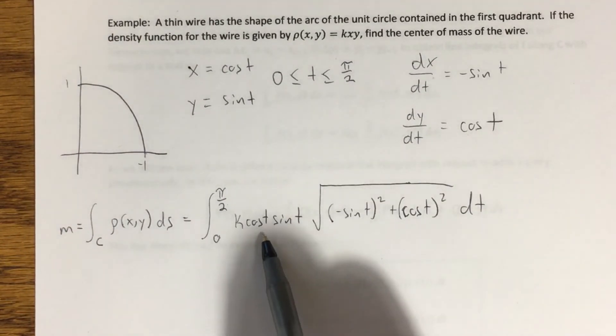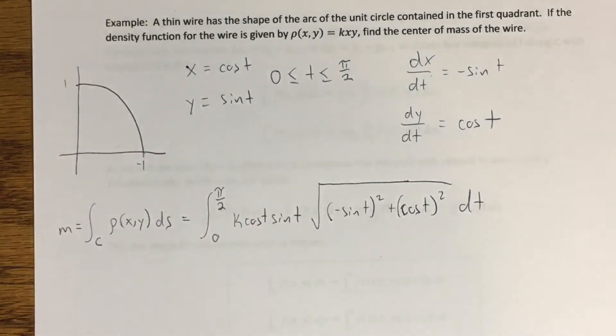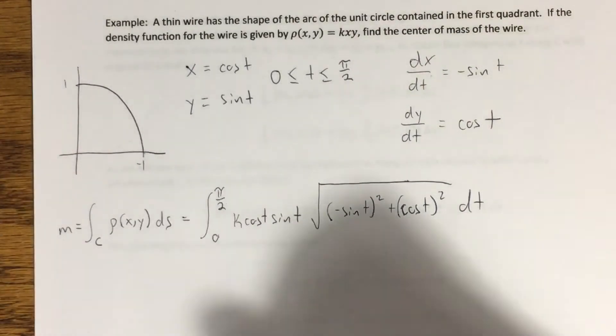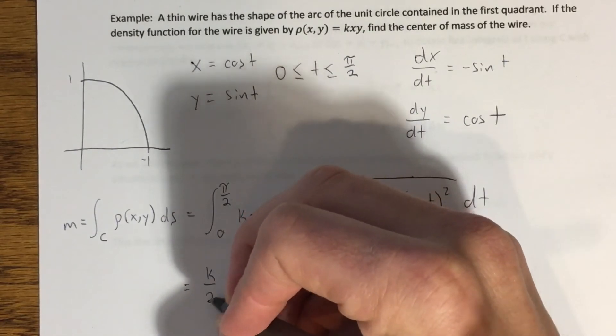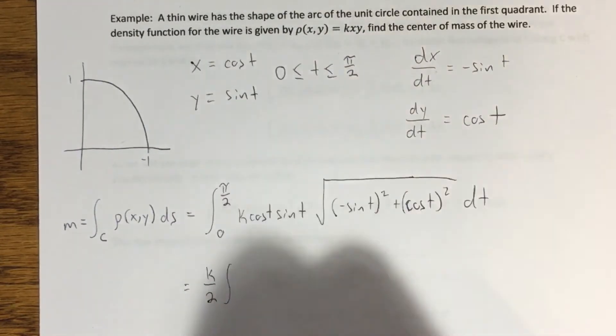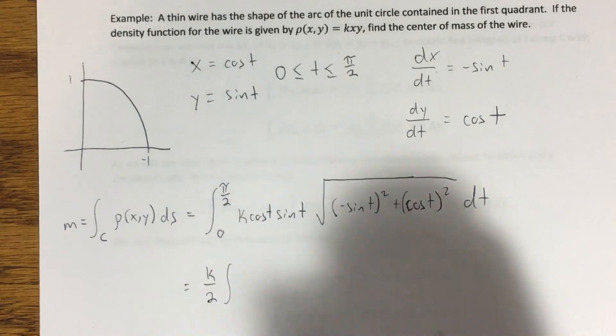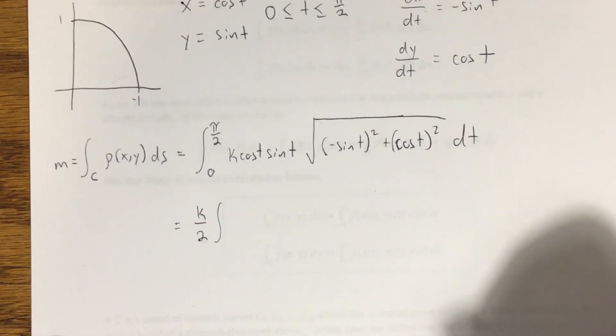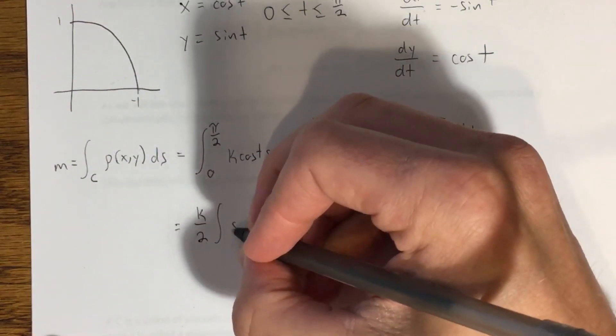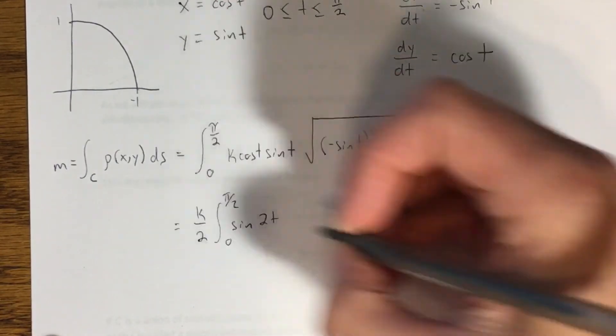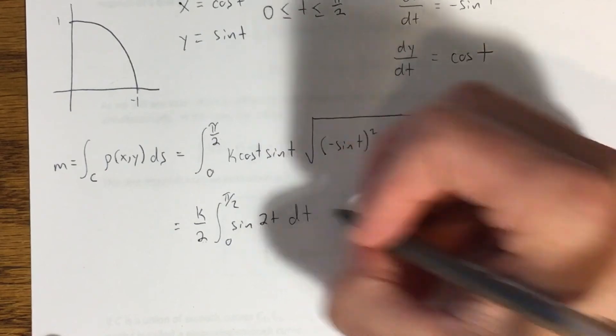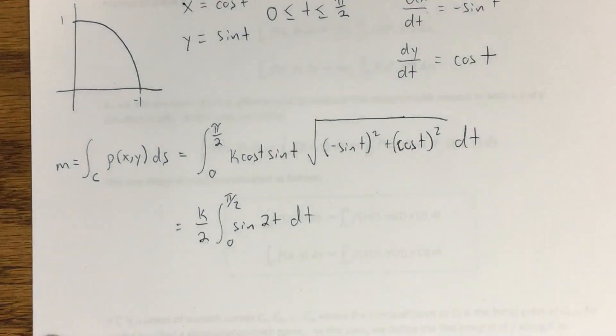Then in addition to that, I can pull a k out because it's a constant, and sine times cosine is the same thing as 1 half times sine of 2t. I can use the double angle formula for sine here. So, simplifying things way down, this becomes k over 2 out here. And again, this 2 is because of what I did by converting sine of t, cosine of t into sine of 2t. Sine of 2t. Here's my limits. 0 to pi over 2. dt, because that whole thing just went to 1. Okay?